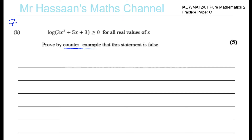What does counter example mean? It means you need to find just one example which proves this statement false — one value of x which causes this whole thing to be less than 0.